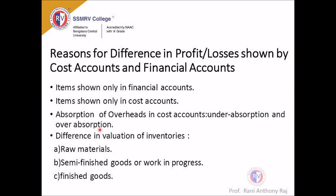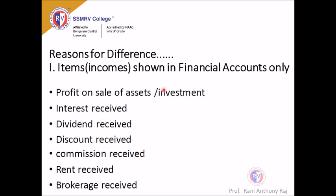We will now look at the reasons for difference in profit or loss shown by the cost accountant and the financial accountant. The first reason is items shown only in the financial accounts. In financial accounts there are incomes such as profit on sale of assets, interest received, dividend received, discount received, commission received, rent received, and brokerage received. These are incomes of a financial accountant where the cost accountant will not have the details, and this is a major reason for reconciliation.